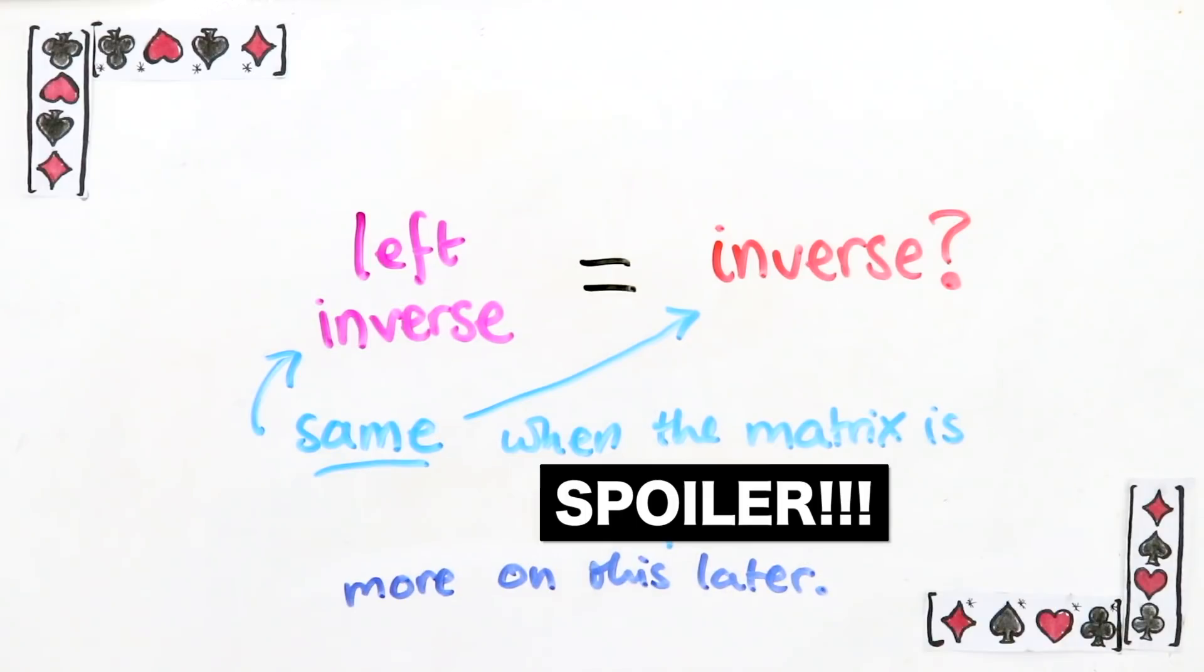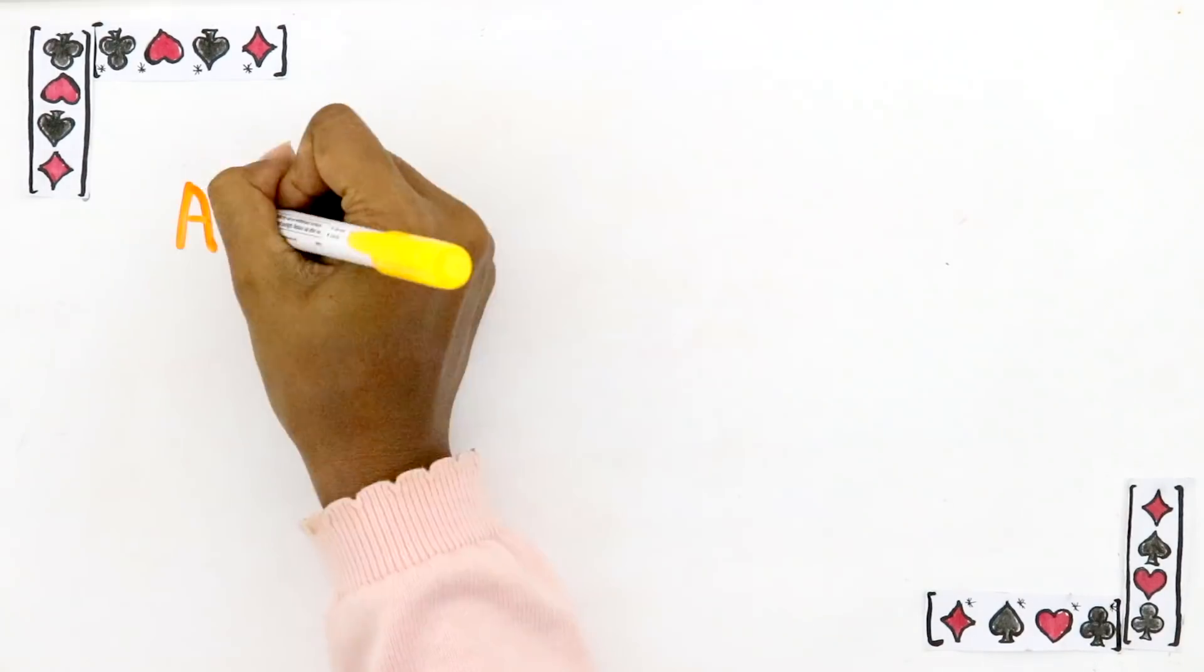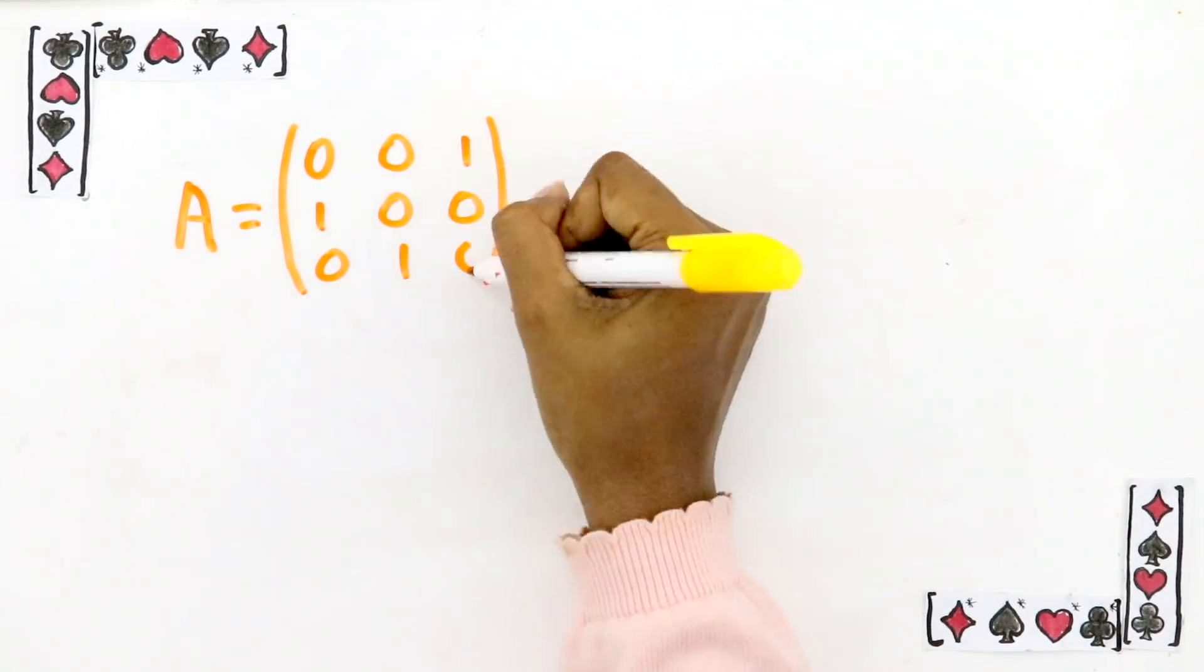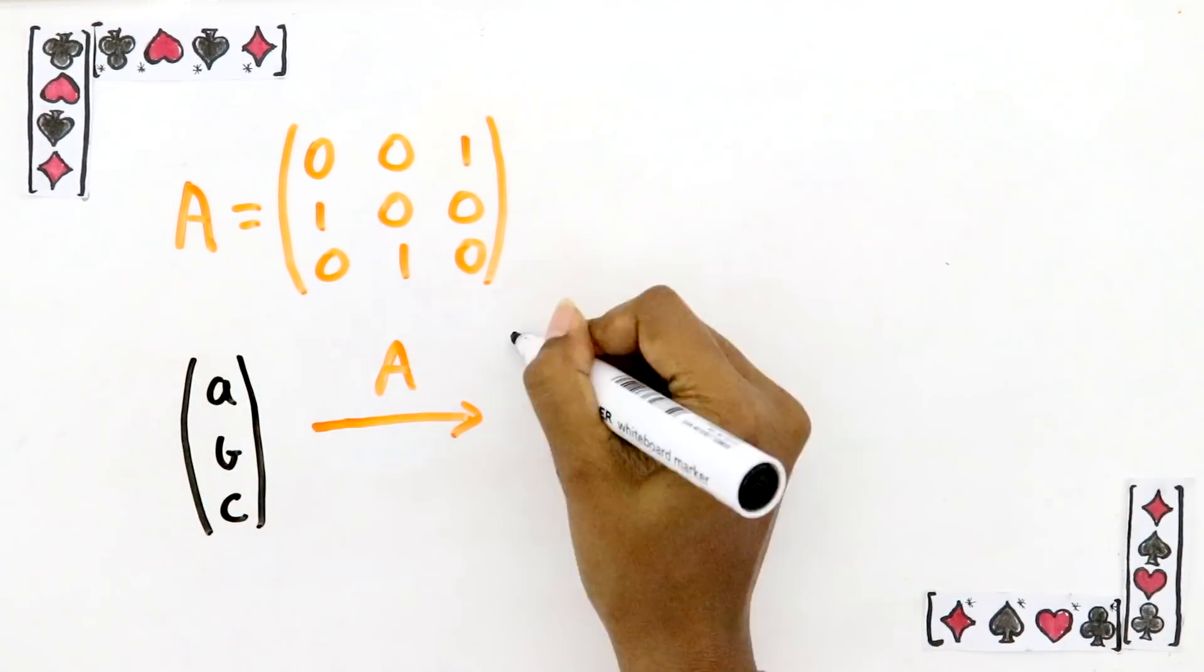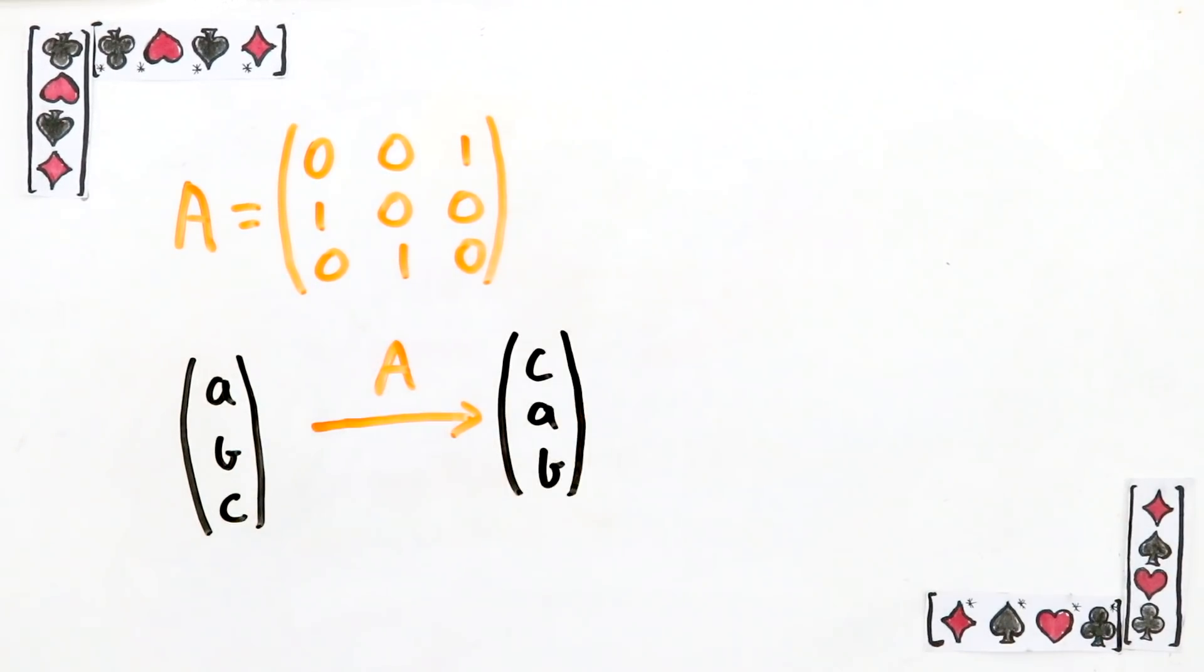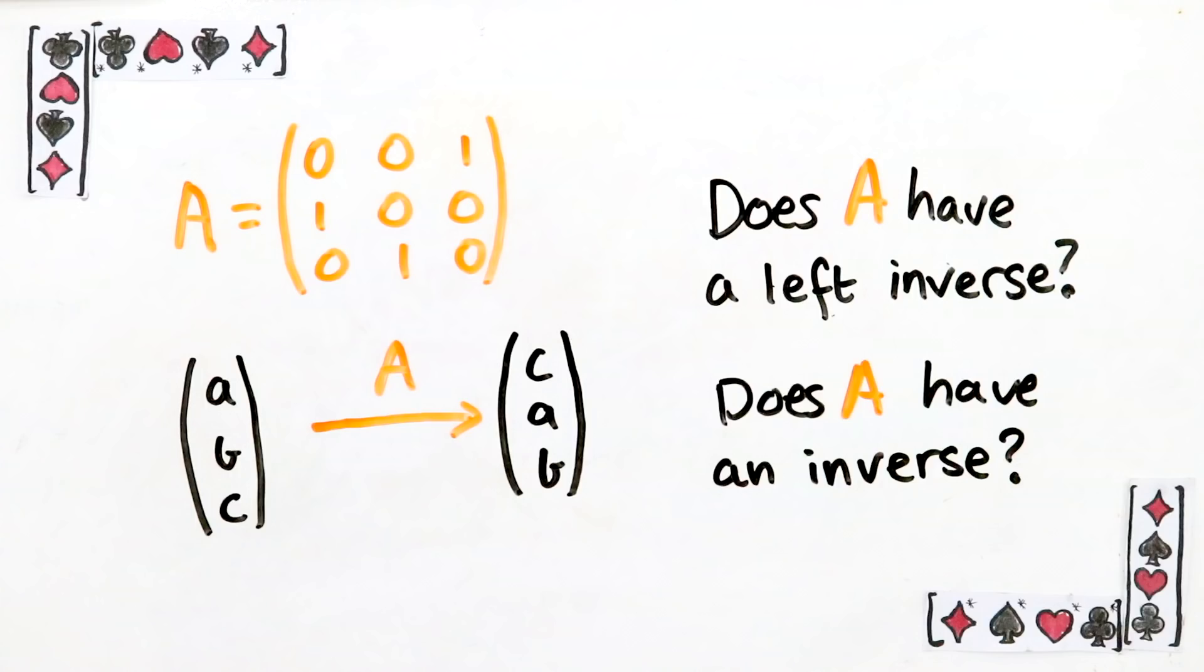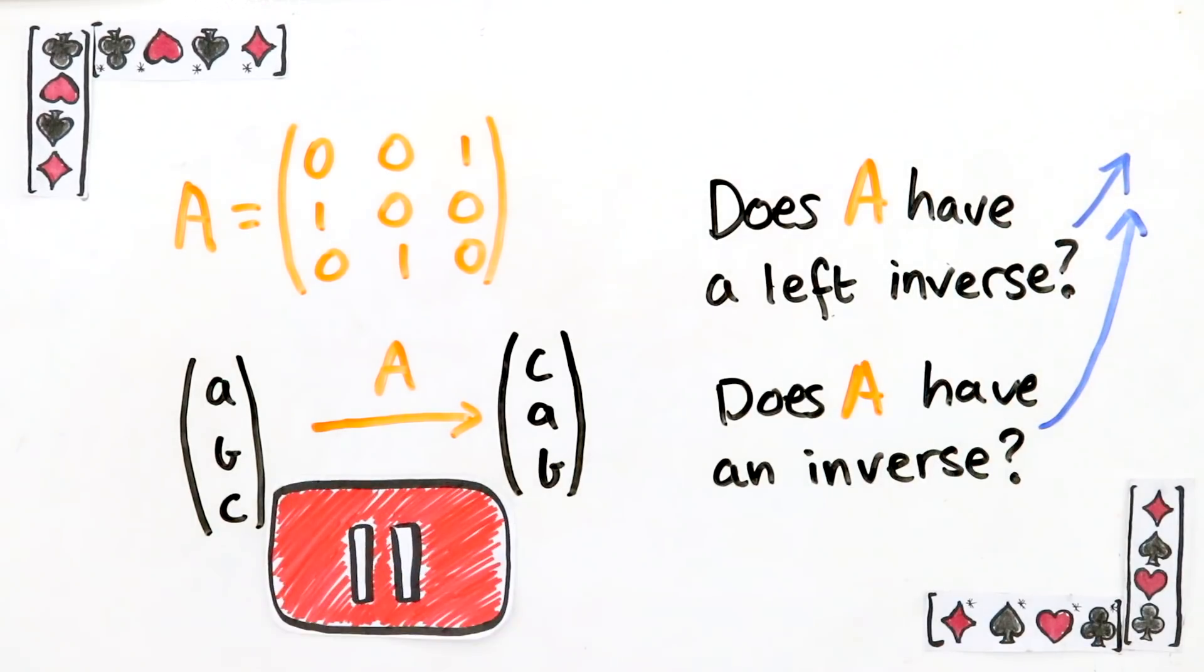Before we move on, let me ask you a question to check you've understood this so far. Imagine you have a matrix like this. What it does is it takes a 3D vector and then jumbles up the components. Does this matrix have a left inverse? As in, can you undo this? Then if it does have a left inverse, figure out if it has an inverse as well. Put your answer in the poll in the corner and pause the video now to think about it.